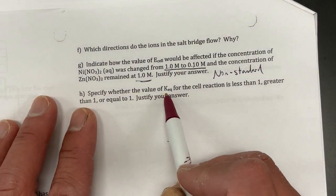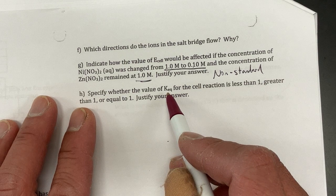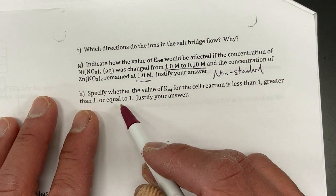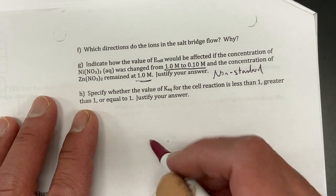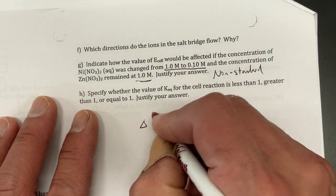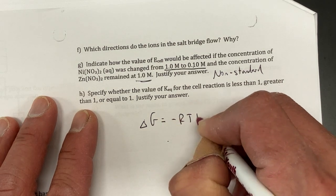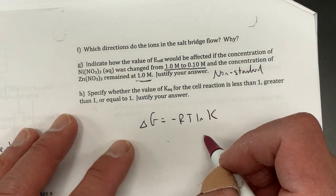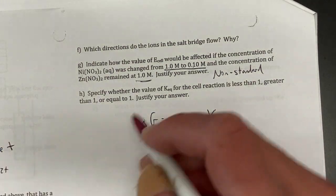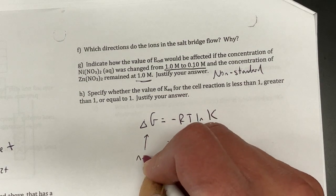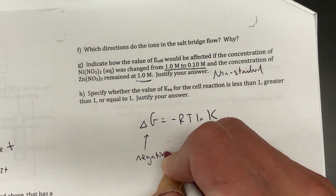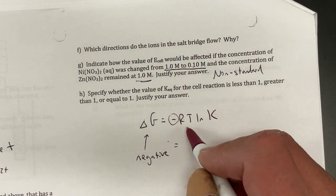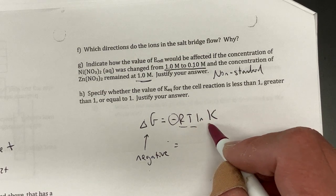And the last question is: state whether K, the equilibrium constant, is less than 1, greater than 1, or equal to 1. Well for this one you need delta G equals negative RT ln K. That's also on your equation sheet. And from before I know delta G is negative—this thing here is negative, right? So that's negative. Well I have a negative here, R is always positive, T is always positive, that means ln of K must be positive.